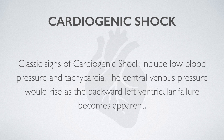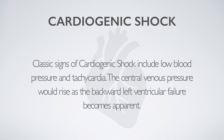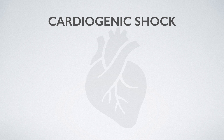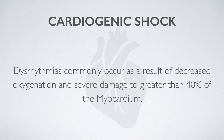Classic signs of cardiogenic shock include low blood pressure and tachycardia. The central venous pressure would rise as backward left ventricular failure becomes more apparent. Dysrhythmias commonly occur as a result of decreased oxygenation and severe damage to greater than 40% of the myocardium.